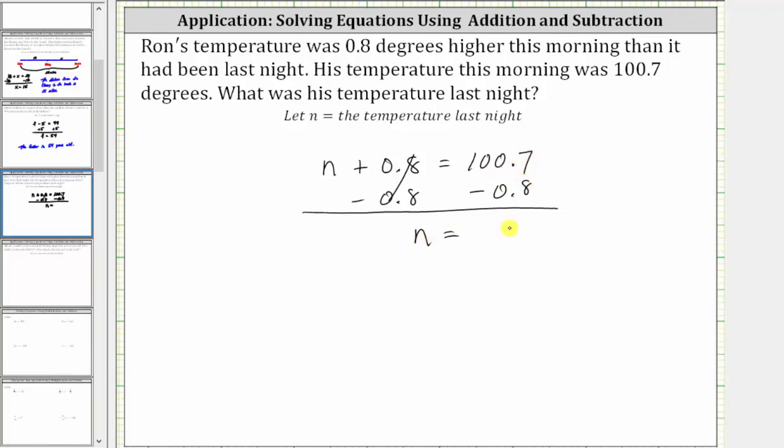And now subtracting here, we bring the decimal point down. And because we can't subtract eight from seven, we need to perform an exchange. We have to go all the way over to the one in the hundreds place value. The one changes to zero. We place a nine in the tens place value, a nine in the ones place value, and then we add 10 to the seven in the tenths place value, giving us 17 tenths.